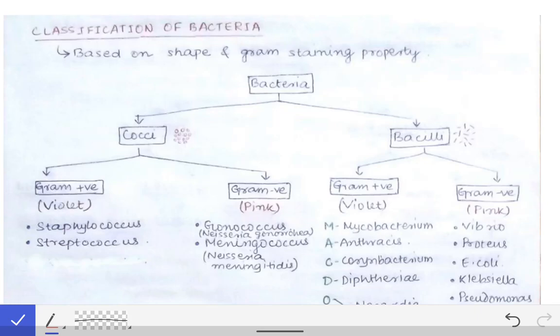We will see the classification of bacteria. Bacteria are classified on the basis of their shape into cocci and bacilli, and further classified on the basis of their gram staining property. If a bacteria after gram staining comes out to be purple or violet in color, that will be called gram positive, and if it comes out to be pink in color, that will be called gram negative.